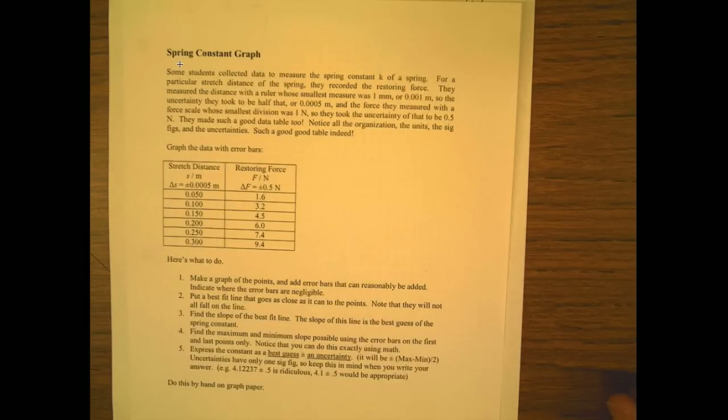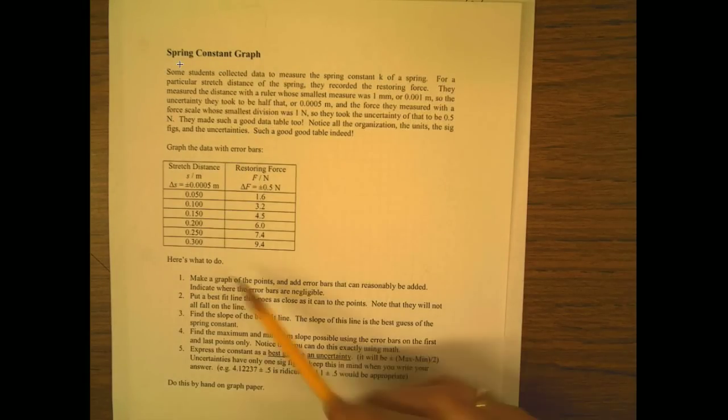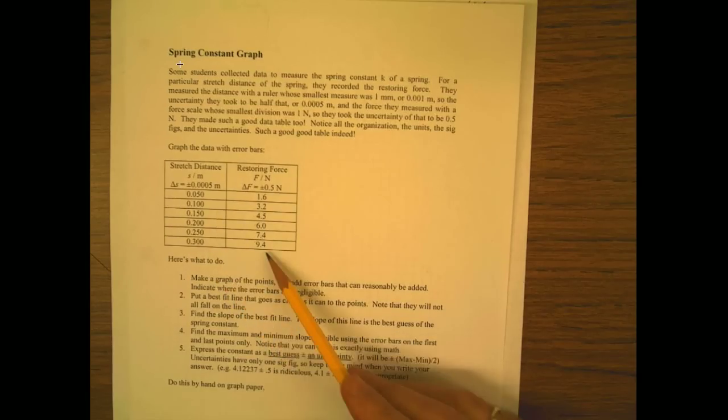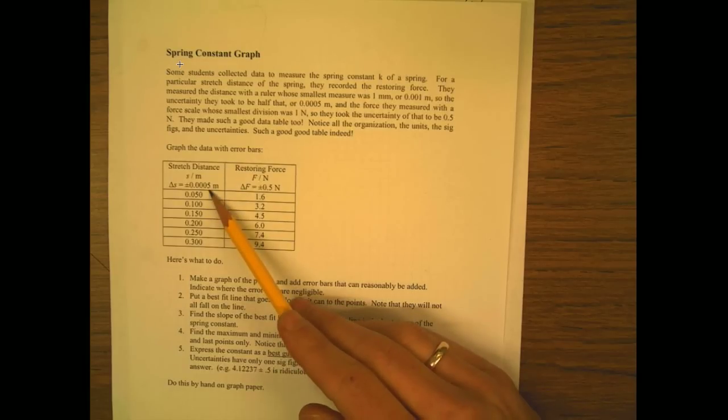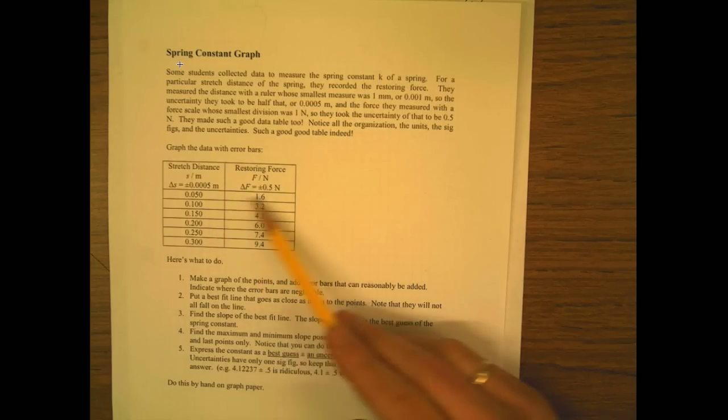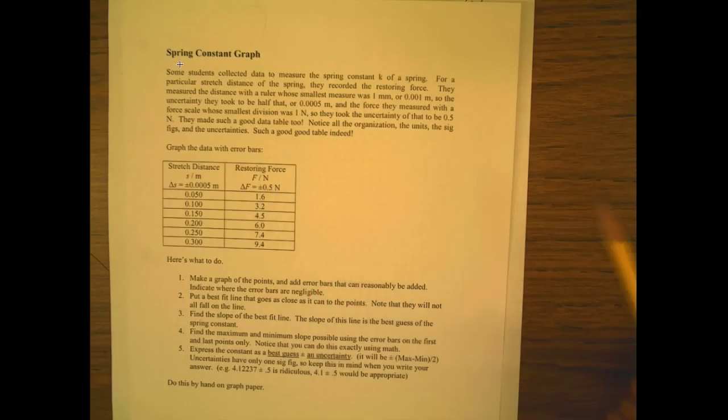I'm going to show you how to do the graph for the spring constant graph. So this is the handout. You should have that and you'll be able to work on this in class. But here is our beautiful data table. Here is our restoring force. Notice that that uncertainty right there is very small, but this one's quite large, so we'll actually be able to draw a graph with error bars.